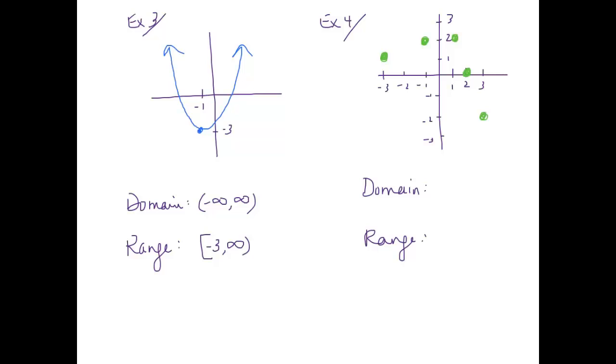How about the domain and range of this scatter plot here? This one's different because we don't have any intervals. So when we write the domain for this, we're going to have to write it as a set. Here come my curly braces. And again, I like to write them in order. So domain, we're going to use our x values. So we have negative three, negative one, one, two, and three.